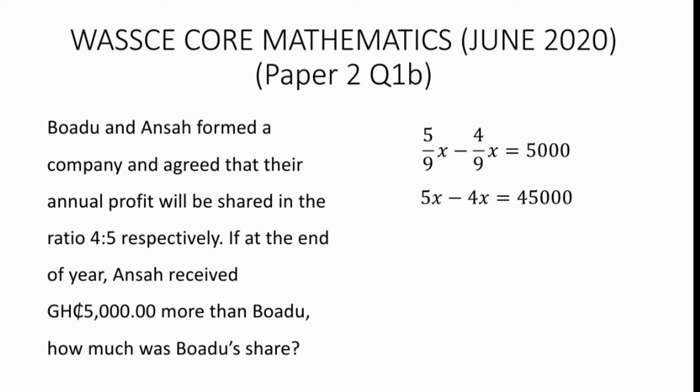Simplifying this will give us 5x minus 4x equals 45000. x equals 45000 Ghana cedis, which means the annual profit equals 45000 Ghana cedis.